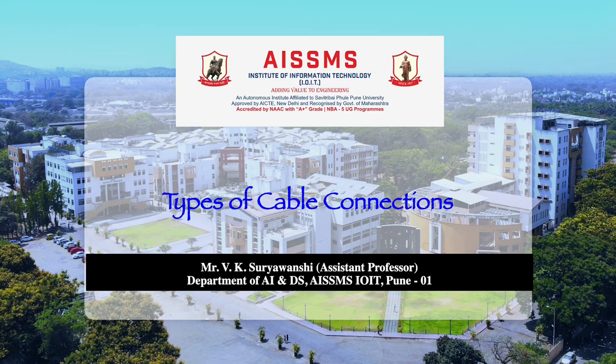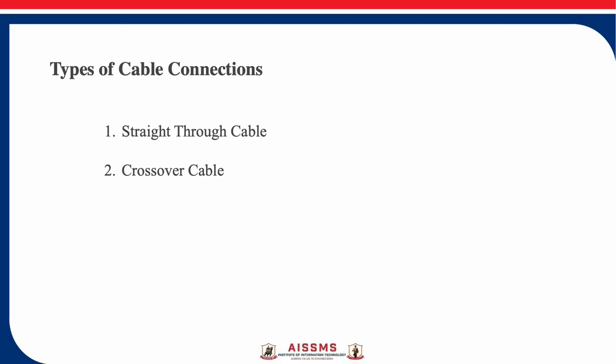Hello everyone, my name is Vaibhav Suryavanshi. I am currently working as an assistant professor in the department of AI and DS at IOIT Pune. Today we are going to see a topic of computer networks — types of cable connections. There are two types: straight-through cable and crossover cable, and both are Ethernet cables. Ethernet cables are used for internet connections in LAN and have RJ45 connectors on both ends.